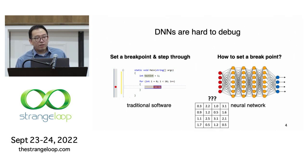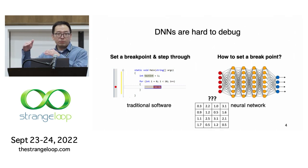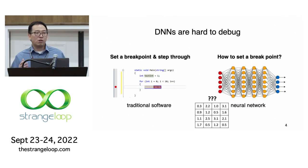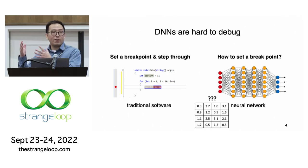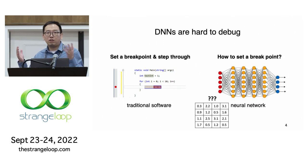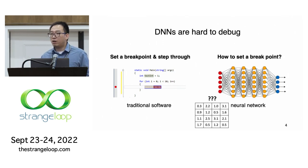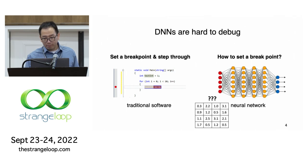Even if sometimes we can peek into the internals — a specific layer or neuron in the neural net — what we get at runtime are high-dimensional arrays, which are hard to interpret.